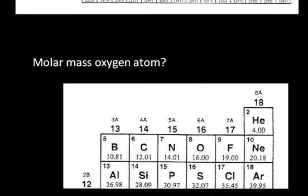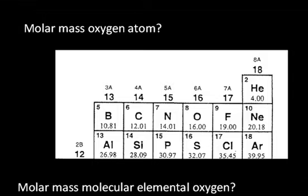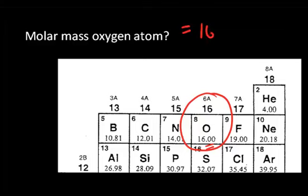Now, what if I were to ask you, what is the molar mass of an oxygen atom? You would simply look at the periodic table, find the oxygen atom on the periodic table right here, and read the number, and you would say that the molar mass of an oxygen atom equals 16.00 grams per mole.